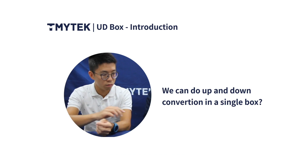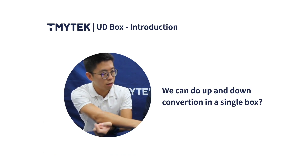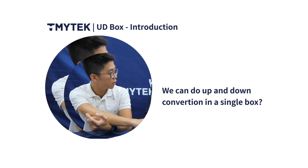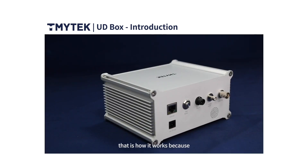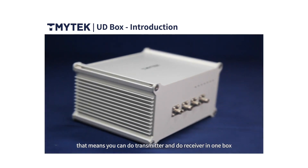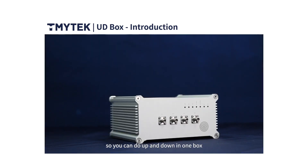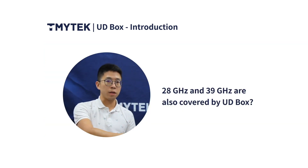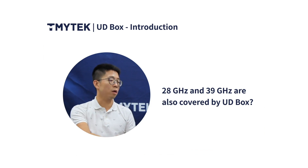Just one question — we have two channels here, so we can do up and down conversion in a single box? Exactly, and that's how it works. We designed dual channel from the beginning to fulfill most communication and experiment setups. That means you can do transmitter and receiver in one box — both up and down in one box. For people working on 28 GHz and 39 GHz, is it covered by the UDBOX? Yes, exactly.